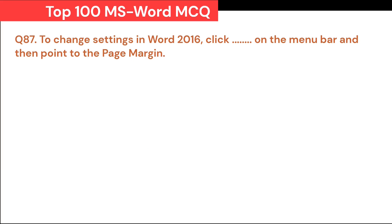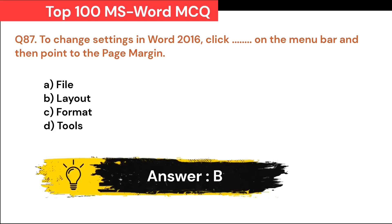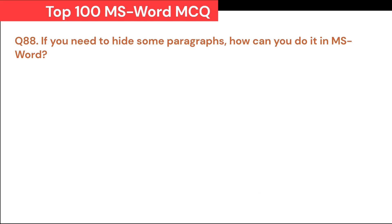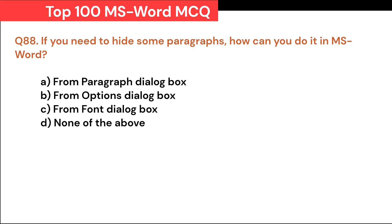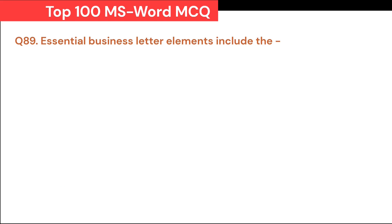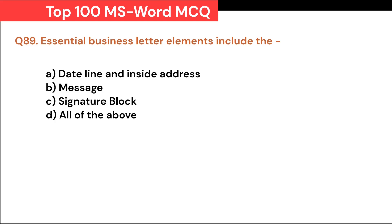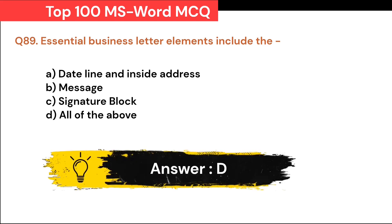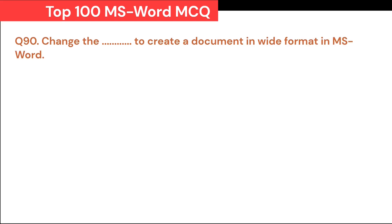In MS Word, to insert a mathematical sign, we use the Dash option: A. Symbol. B. Objects. C. Shapes. D. Equation. Correct answer is D. Equation. To change settings in Word 2016, click Dash on the menu bar and then point to page margin: A. File. B. Layout. C. Format. D. Tools. Correct answer is B. Layout. If you need to hide some paragraphs in MS Word, how can you do it? A. Paragraph dialog box. B. Options dialog box. C. Font dialog box. D. None of the above. Correct answer is C. From Font dialog box.